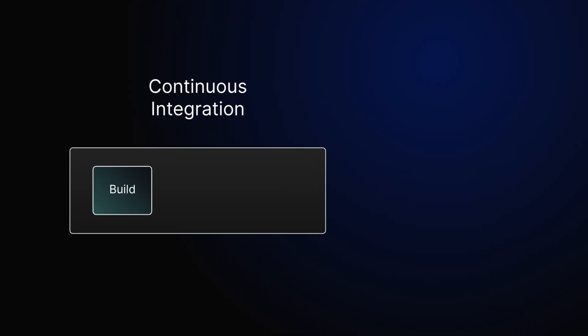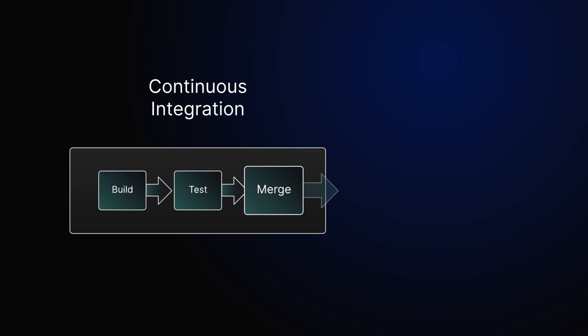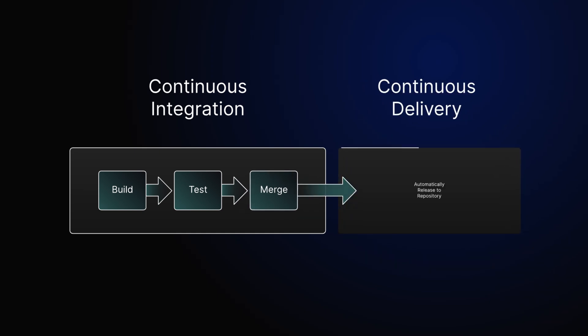CI/CD aims to automate the software development lifecycle, from integrating code changes to deploying applications. This practice encompasses several principles, tools, and practices that enable developers to deliver software more frequently and reliably.